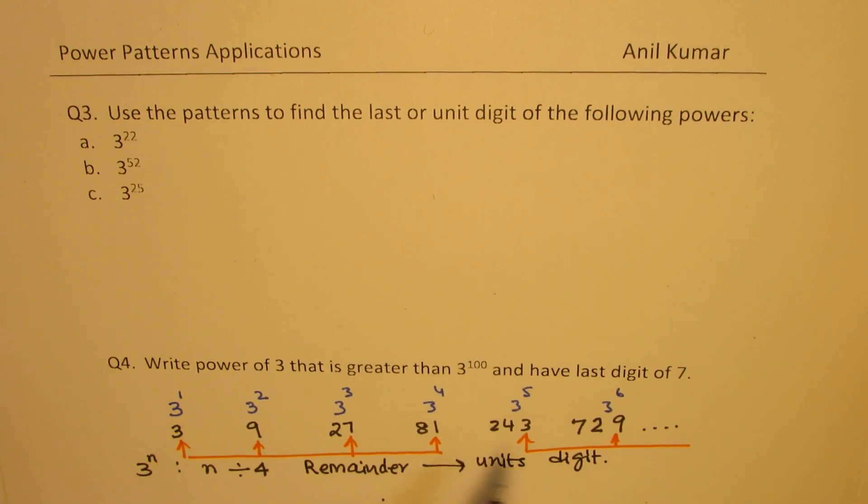Is that clear to you? So, dividing by 4, if the remainder is 1, then you get 3 as your unit's digit. If the remainder is 2, then the unit's digit will be 9. If it is 3, it will be 7. 4 means it goes evenly, remainder is 0, then you get 1 as your answer, correct?